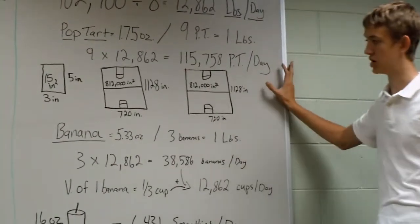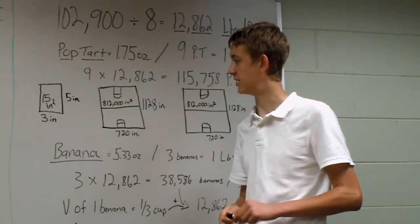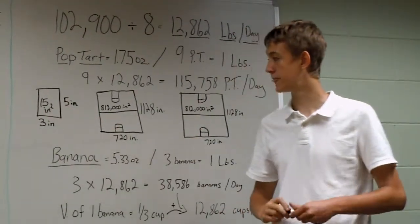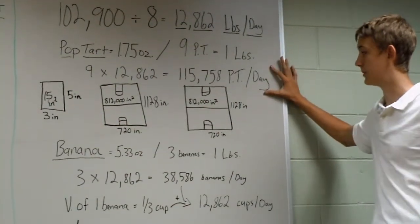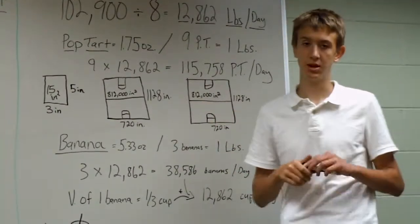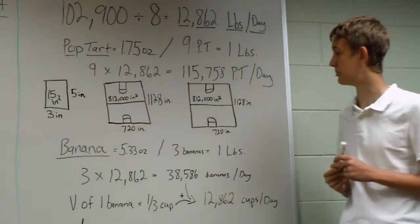So let's put this in geometry terms. Let's say an average Pop-Tart is 3 by 5 inches. So it is 15 inches squared. So you take those 15 inches squared and multiply by the Pop-Tarts per day. And that equals two Pop-Tarts that are the size of an NBA basketball court. Can you imagine eating Pop-Tarts that big?